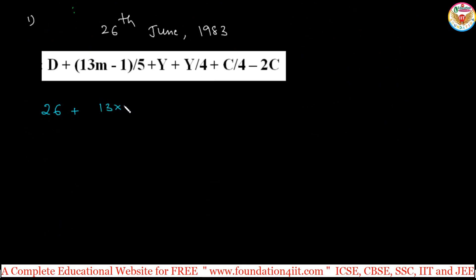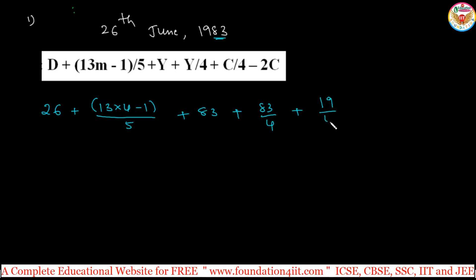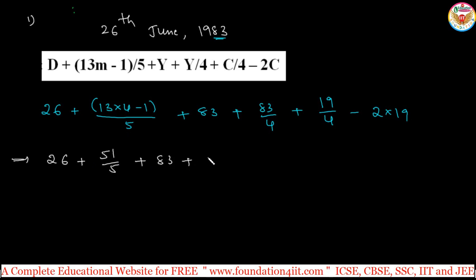Substituting: 26 + ⌊(13×4 − 1)/5⌋ + y + ⌊y/4⌋ + ⌊c/4⌋ − 2c. The year is 1983, so y = 83 and c = 19. This gives: 26 + ⌊(52 − 1)/5⌋ + 83 + ⌊83/4⌋ + ⌊19/4⌋ − 2×19. That is: 26 + ⌊51/5⌋ + 83 + ⌊83/4⌋ + ⌊19/4⌋ − 38.